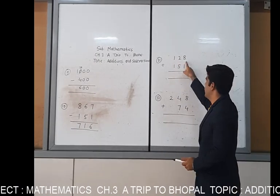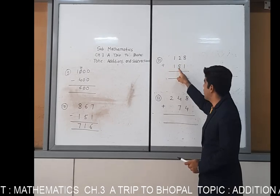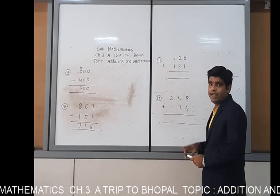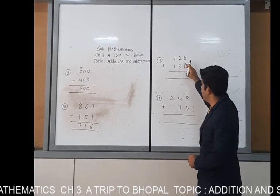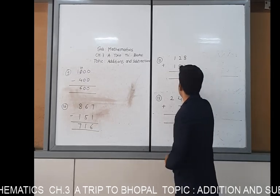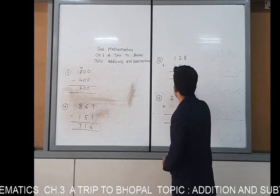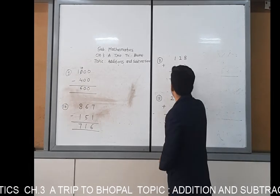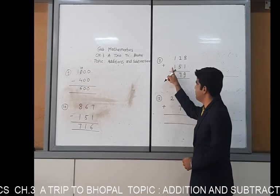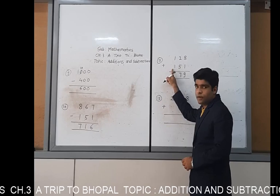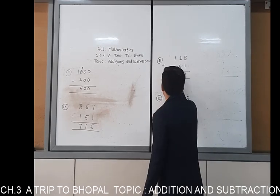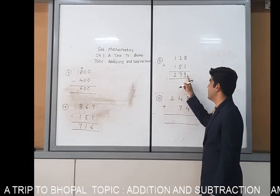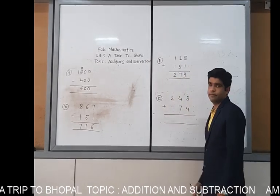Example number 11: 128 add with 151. Simple addition. 8 plus 1 is 9. 2 plus 5 is 7. 1 plus 1 is 2. Your answer is 279.